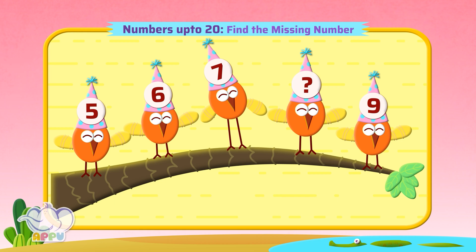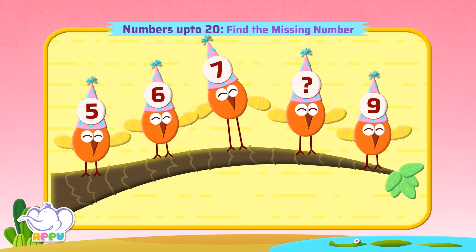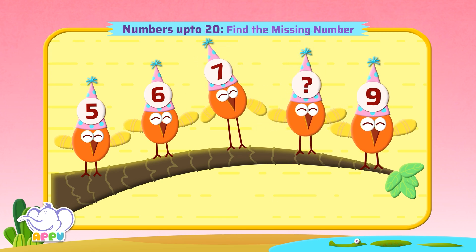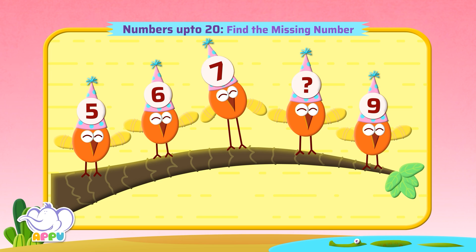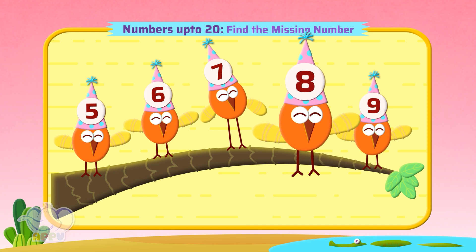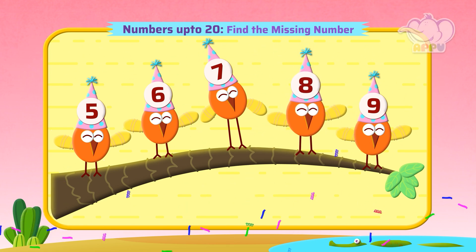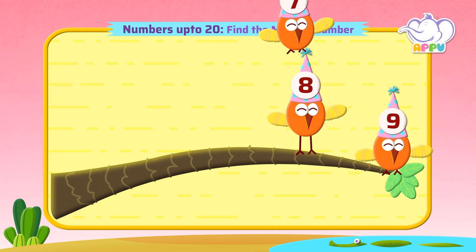Over here we see birds with numbers on their party caps. Can you find the missing number? We have 5, 6, 7, and a missing number, and then the number 9. So what comes after 7 and before 9? It is 8. The missing number is 8.